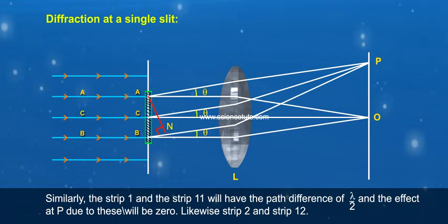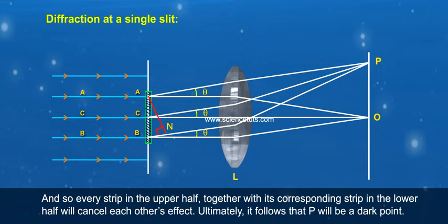Likewise strip 2 and strip 12. And so every strip in the upper half together with its corresponding strip in the lower half will cancel each other's effect. Ultimately it follows that P will be a dark point.